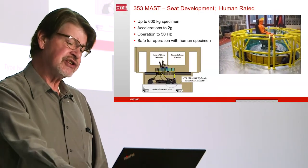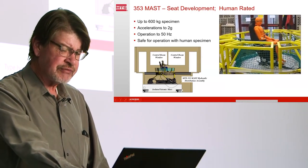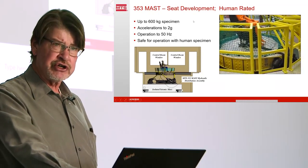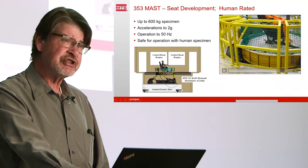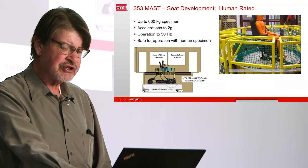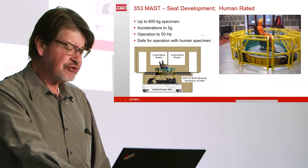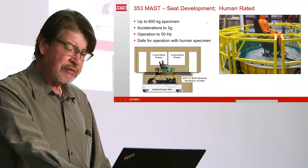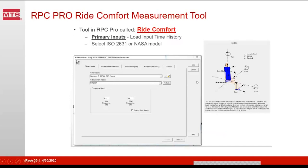This is an example of a seat test. In this case the system is what we call human rated — we can put a real person in here and the system detects what's going on. There are various preventions to keep from putting excessive vibration or impacts into the operator. It keeps track of the vibration experienced and stops testing once the operator has reached his daily exposure. We can also put an instrumented dummy in here and measure the response, and use ride comfort evaluation to evaluate the accuracy of the seat isolation. Because we have multi-axial excitation we can excite the seat in many different directions and study specific aspects of ride comfort that are directionally sensitive.